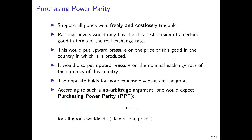Then everybody all over the world would want to buy their bicycle in the Netherlands. This would lead to upward pressure on the price of bikes in the Netherlands, because there is so much demand from everywhere in the world. At the same time, there would be a large inflow of currency into the Netherlands, putting upward pressure on the nominal exchange rate — in this case the euro, because the Netherlands is part of the euro area.